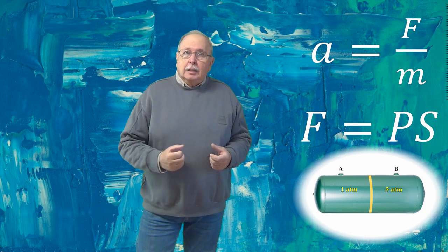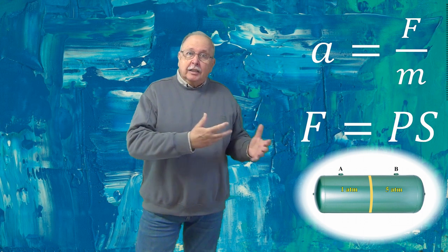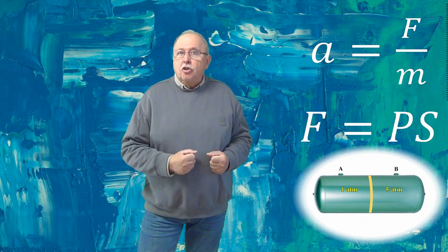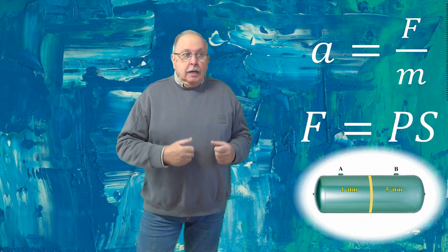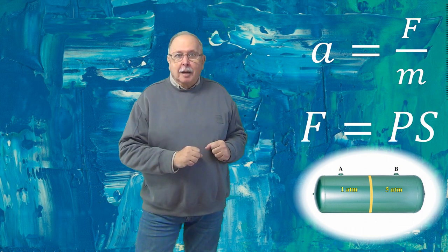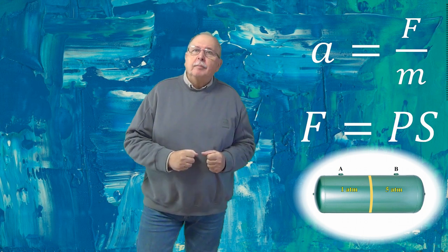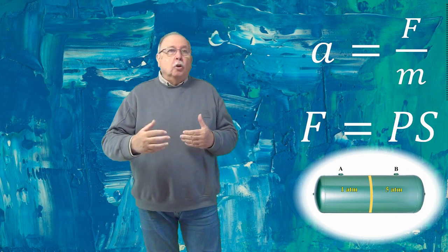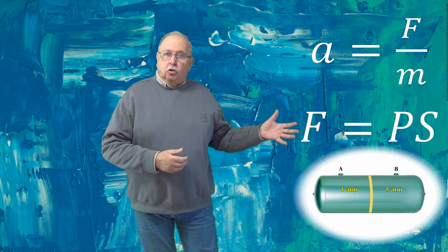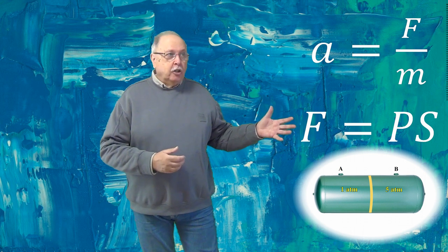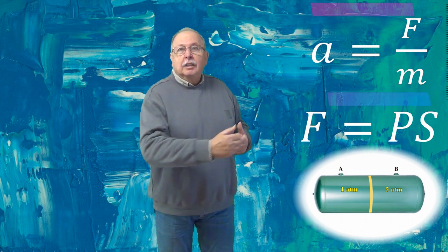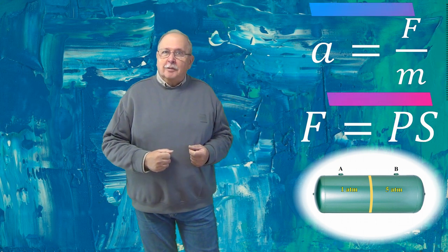Deci până la golirea compartimentelor, masa de aer care iese din compartimentul de presiune mai mare este de 5 ori mai mare decât masa aerului care iese din celălalt compartiment. Dar și forța medie care a împins aerul afară este de 5 ori mai mare. Trebuie să vorbim despre forță medie, pentru că forța scade în timp odată cu scăderea presiunii. Și atunci accelerația aerului la ieșirea din cele două compartimente este aceeași, deoarece și numărătorul și numitorul acestei fracții au crescut de 5 ori în cazul compartimentului cu presiune mai mare.